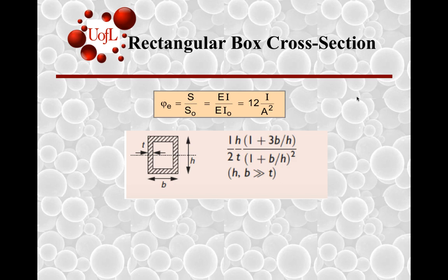What happens when h equals b? You have 4 in the numerator, 2² which is 4 in the denominator—this drops off, and so you just have h divided by 2t for a square cross-section.